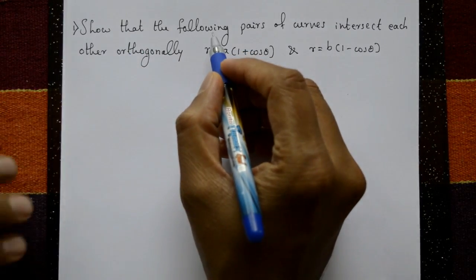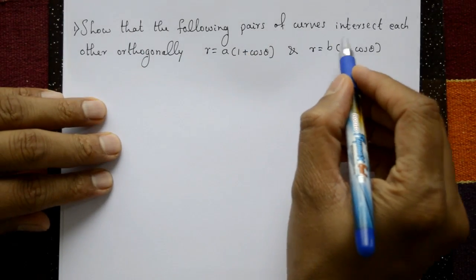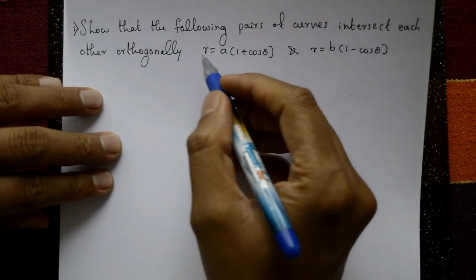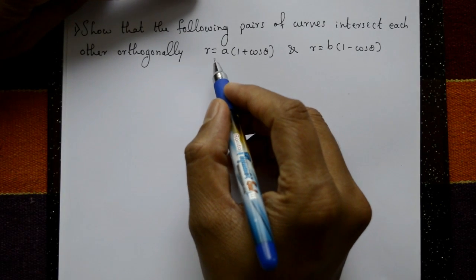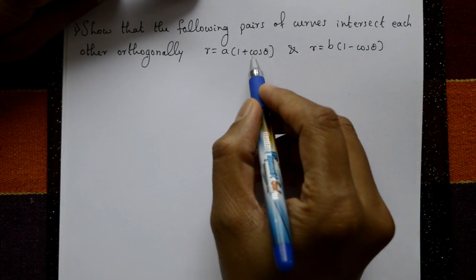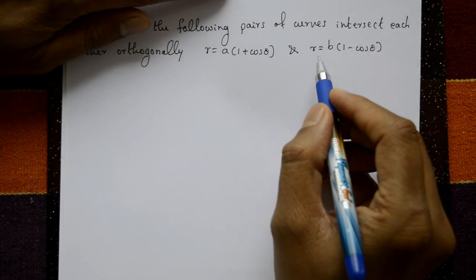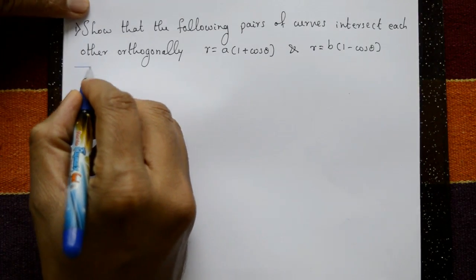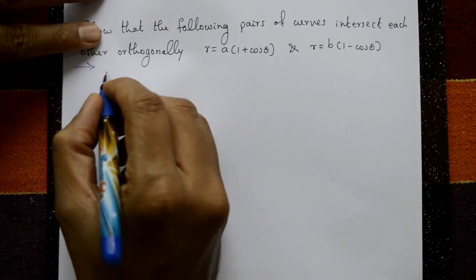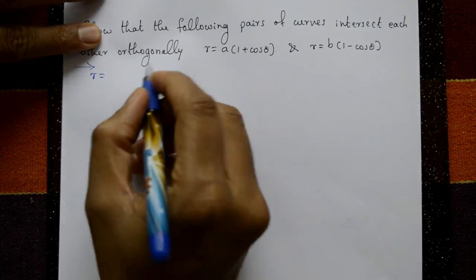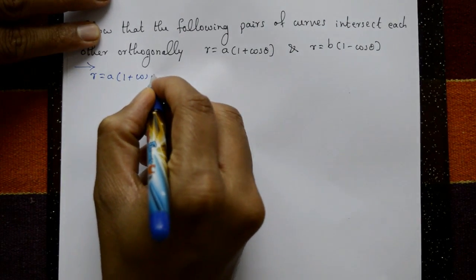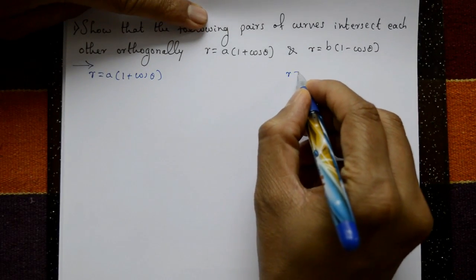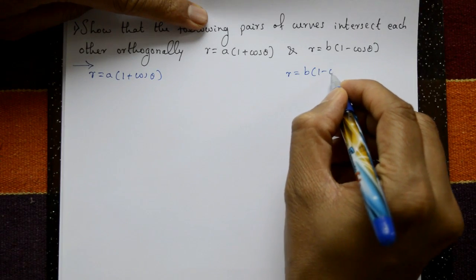Show that the following pairs of curves intersect each other orthogonally. Orthogonally means the angle is equal to 90 degrees, that is pi by 2. First curve: r is equal to a into 1 plus cos theta. Second curve: r is equal to b into 1 minus cos theta. Solution: take first curve r = a(1 + cosθ) and second curve r = b(1 - cosθ).